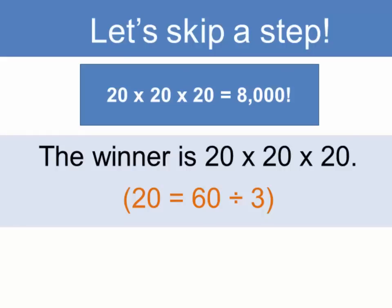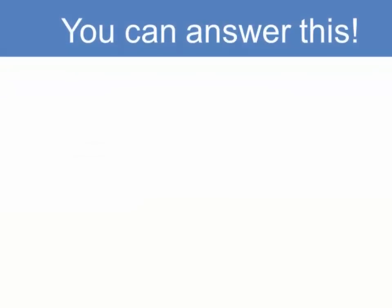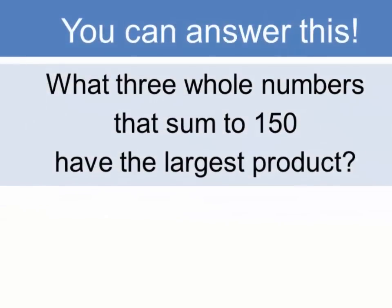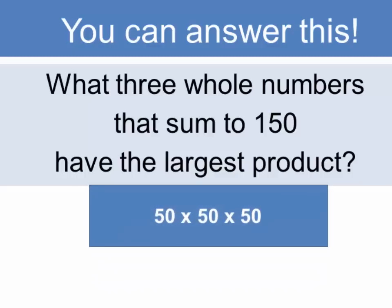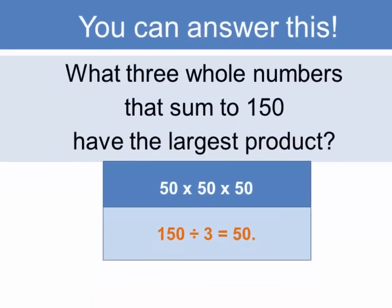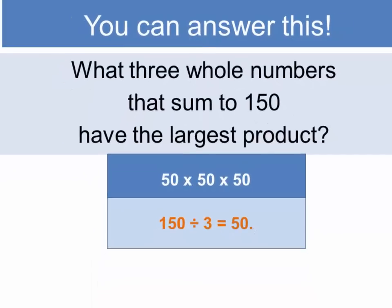And so we've arrived here at a rule of how to optimize the product of numbers that add to a certain number. If I was to ask you now what three numbers that sum to 150 will have the largest product when multiplied against one another, you know that the answer is going to be 50 times 50 times 50, because 150 divided by 3 equals 50.